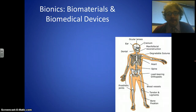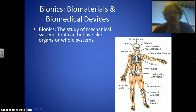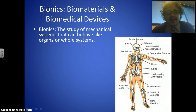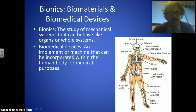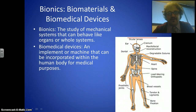First, bionics. Bionics is basically the study of mechanical systems and materials that behave like organs or even whole organ systems. Here we have a diagram labeling all the different parts which can be replaced or augmented. A biomedical device is essentially something you use to replace a part or fix a part — replace in the context of lenses, or fix, such as fastening together broken bones.